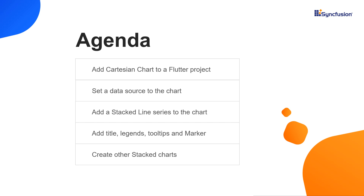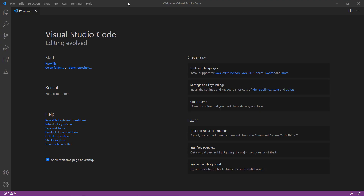Finally, I will show you how the other stacked charts like Stacked Area, Column, Bar, 100% Stacked Line, Area, Column, and Bar Series works. First, open the VS Code Editor. You can also use an IDE you prefer such as Android Studio or IntelliJ.